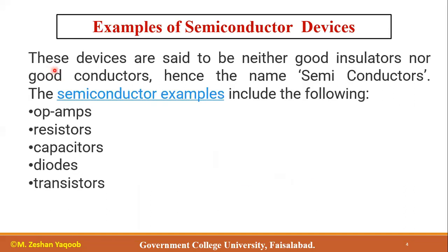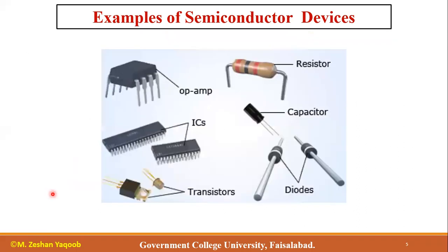Generally, these devices are said to be neither good insulators nor good conductors — hence the name 'semiconductor.' Good examples include operational amplifiers, resistors, capacitors, diodes, transistors, ICs, and operational amplifiers. These are the basic examples of semiconductor devices.